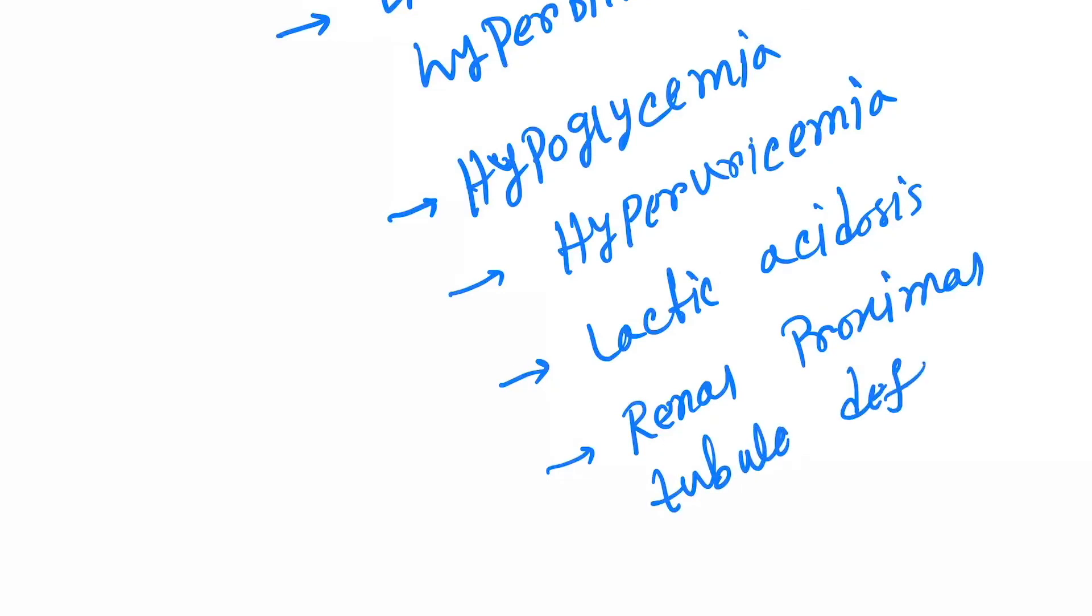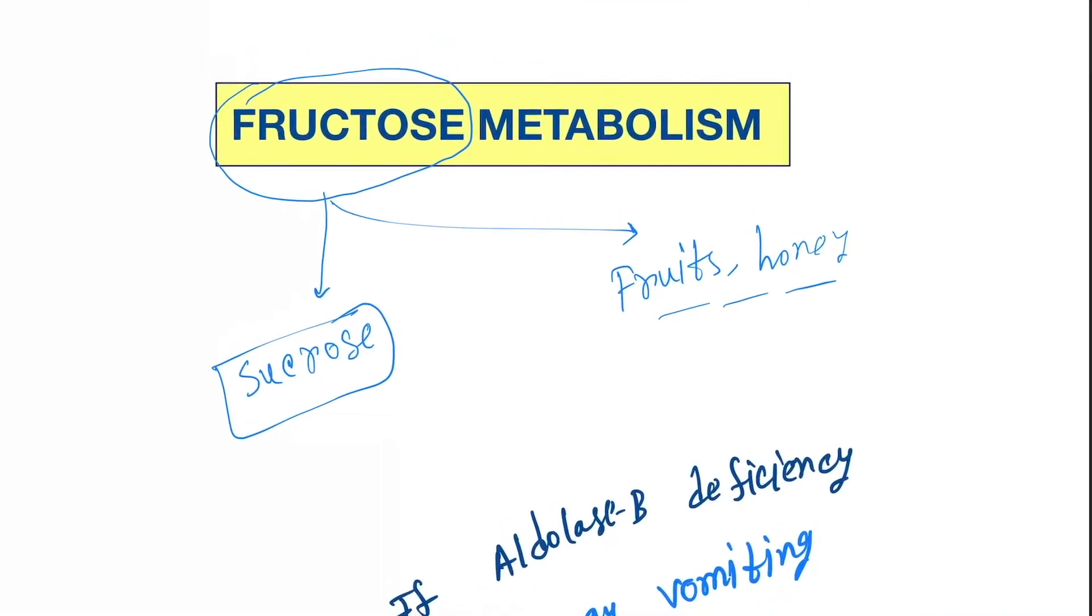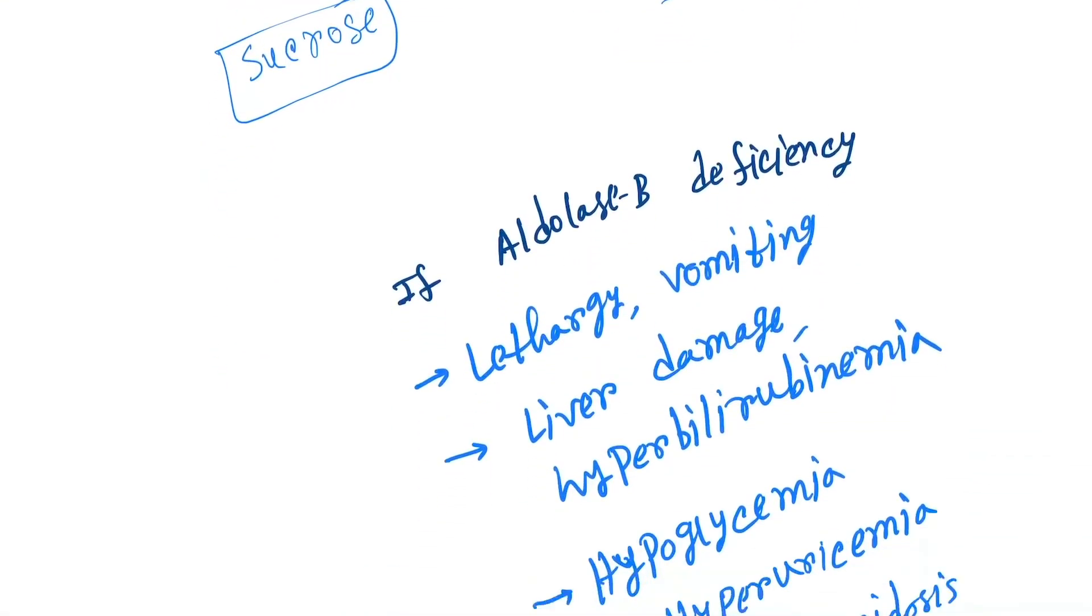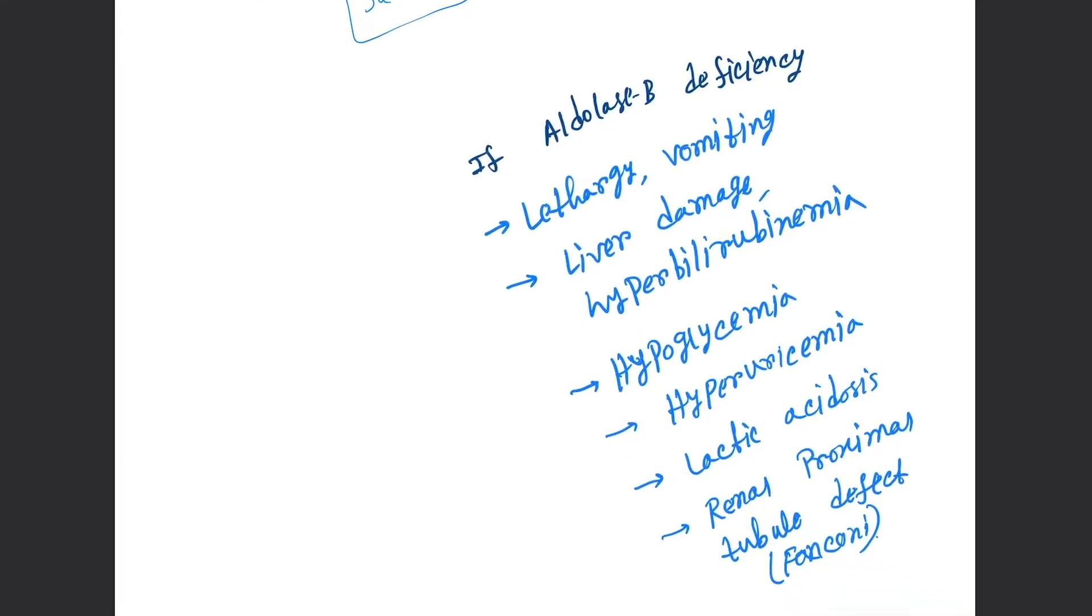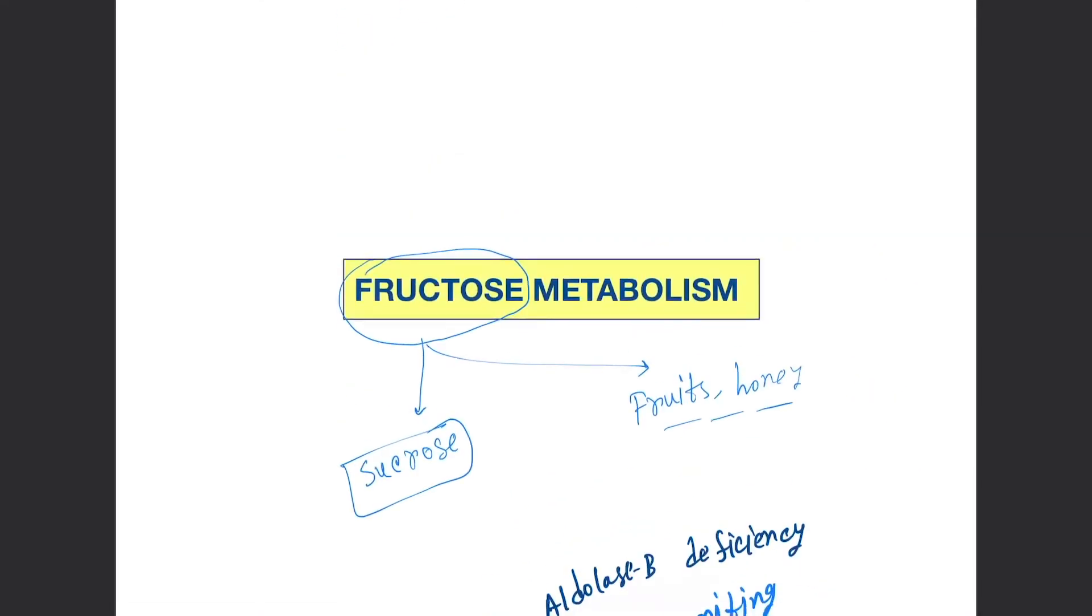This is called Fanconi defect. So that's it. Every metabolic pathway has some clinical relations, and these clinical relations are very important for your clinical knowledge and exam purpose. So that's the fructose metabolism pathway.